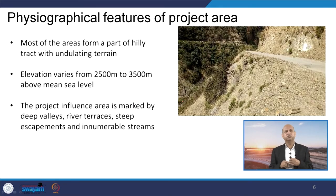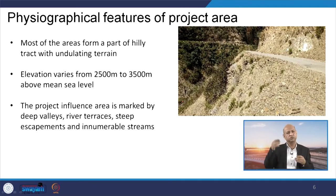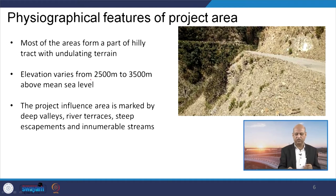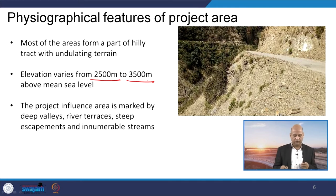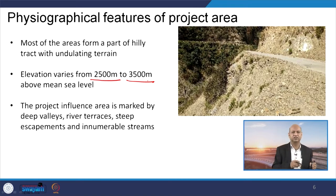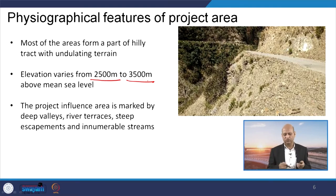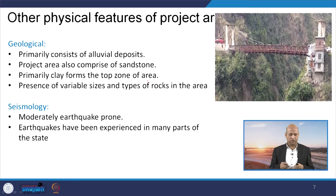Regarding the physiographical features of the project area — this is a hilly area — elevations vary from 2,500 metres to 3,500 metres above mean sea level, meaning a 1,000 metre difference exists, indicating what a challenging project this is. There are deep valleys, drainages, river terraces, steep slopes, and many streams through which this highway has to traverse.